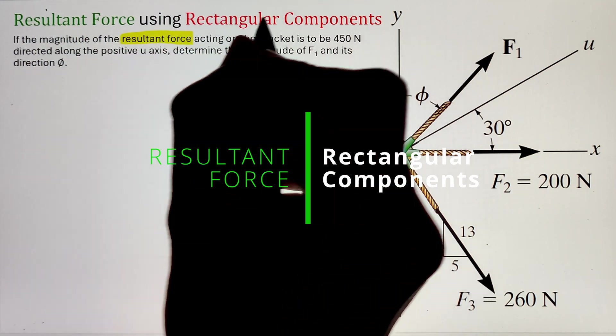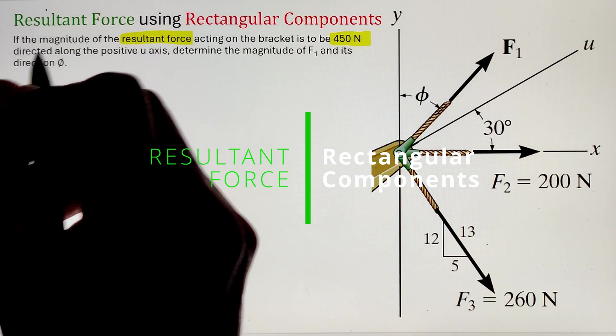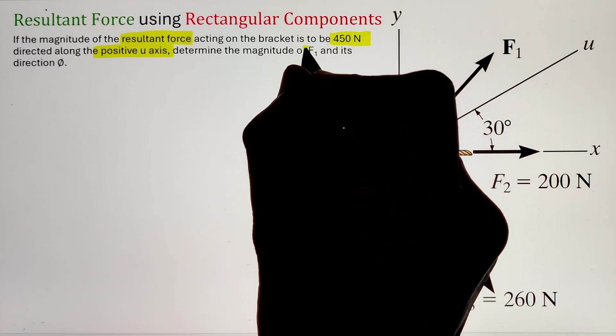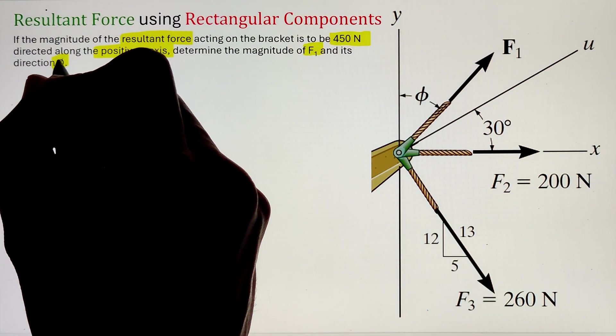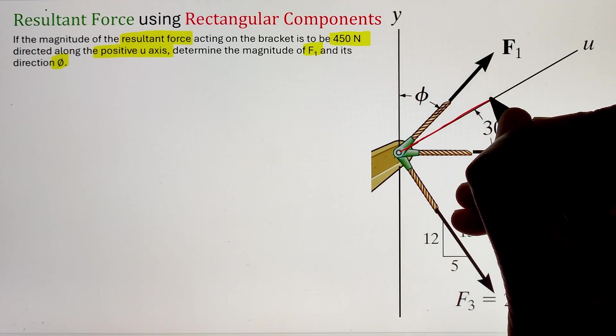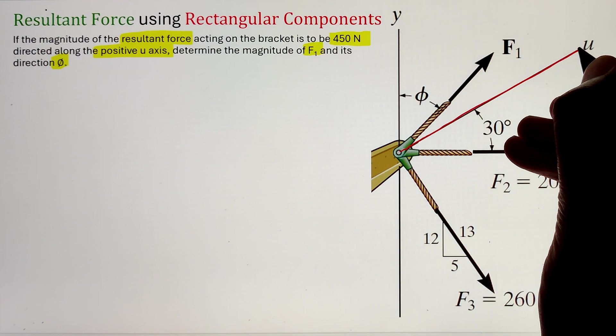If the resultant force of the three force vectors shown in the figure is 450 Newton and it is directed along the positive u-axis, we can identify the force vector F1 and the angle phi it is making with respect to the y-axis utilizing its rectangular components.